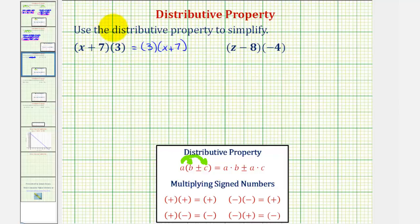So leaving it in this form here, we would have three times x plus three times seven. Again, we have three times x plus three times seven, which would give us three x plus twenty-one,